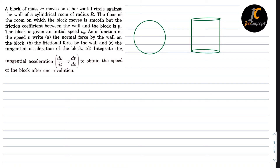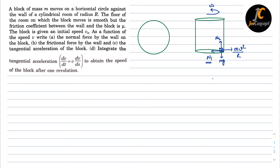So let's say there is a block placed like this. When this room is rotating at a speed omega, the centrifugal force acts in the outward direction, which is mv²/r. The normal force N1 acts from the wall, and there is another normal force N2 due to the mass of the object acting downward. Since the surface is smooth, N2 equals mg. So we concentrate on N1. For part (a), the normal force by the wall on the block is N1, which equals mv²/r.